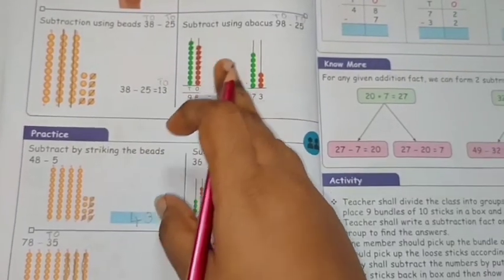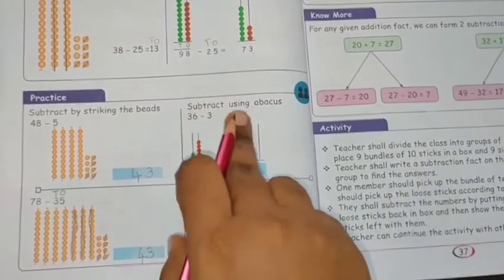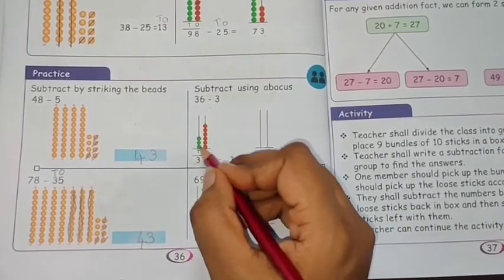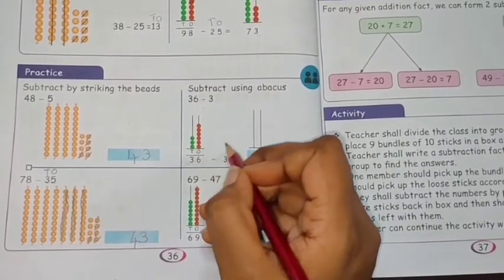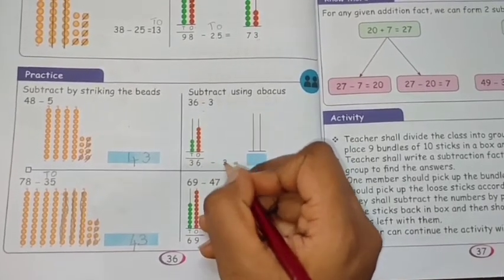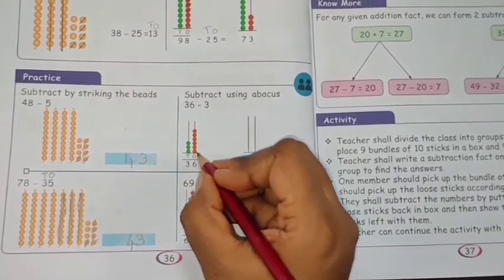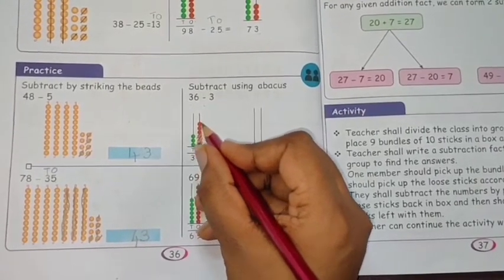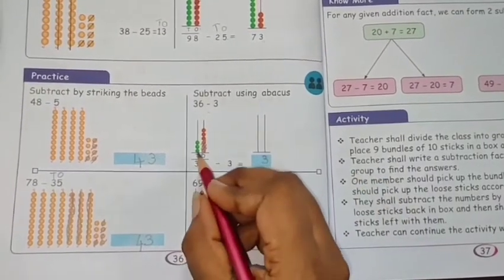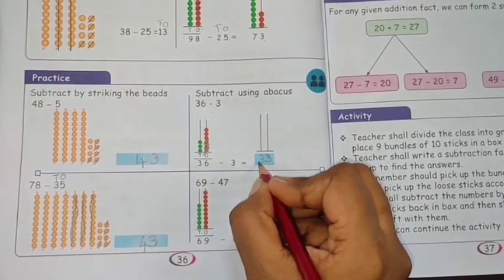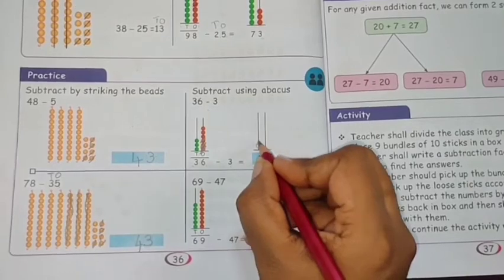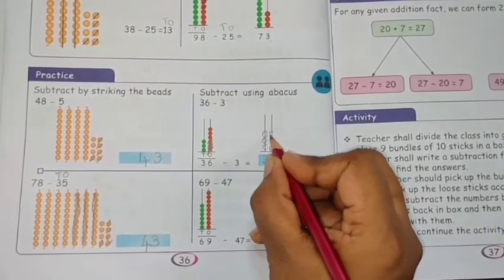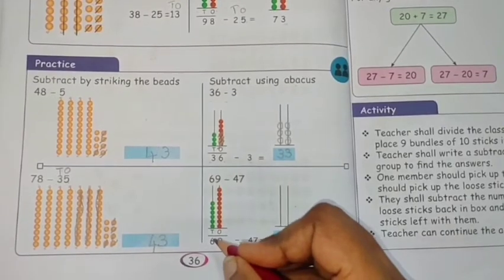Next, subtract using abacus — we already learned this method. For 36 minus 3: beats for 36 are given — 3 in the tens and 6 in the ones. Since 3 is a single digit, strike out 3 beats in the ones column: 1, 2, 3. The tens column has 3. So the answer is 33.